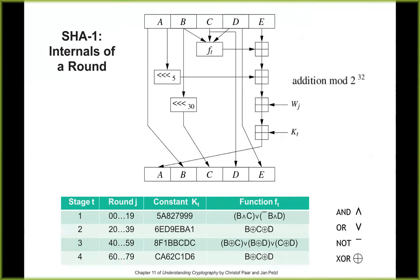The SHA-1 round function takes registers B, C, and D combined with a function; one value is shifted left 5 bits and another shifted left 30 bits, then they are moved around like a five-cell network — the left goes right, the right goes left. Different combinations of AND, OR, and NOT are used for each stage. The operations are specifically chosen to be fast on a 32-bit processor, designed to scramble bits so that changing any bit of input changes everything about the hash unpredictably.